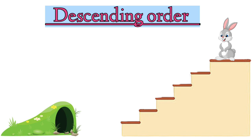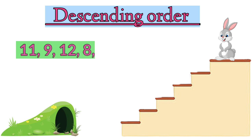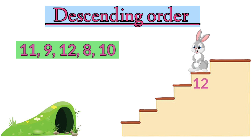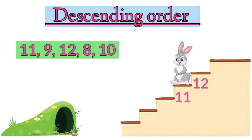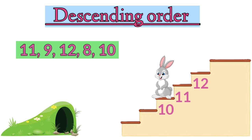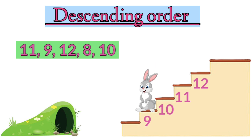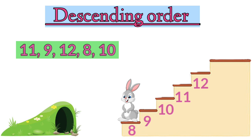We have numbers 11, 9, 12, 8, 10. Now let's all arrange them in descending order. Children, which is the greatest number? Yes, number 12 is the greatest number, so number 12 will come on top. Next number will be 11, then comes 10, followed by 9, and the smallest number, that is 8, will come at the bottom. That's how Mr. Bunny reaches his home by arranging numbers in descending order.